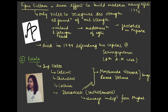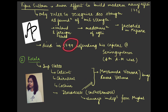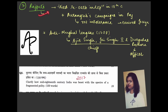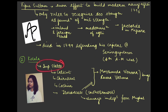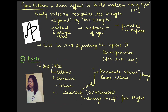Tipu Sultan died during the Fourth Anglo-Mysore War while trying to defend his capital at Seringapatam — remember the name of his capital. He died in 1799. That is one important fact to remember. Another independent kingdom is Kerala. It had important states like Calicut, Chirakkal, Kochi, and Travancore. These names are important because they will come up again when we discuss factories established by various European companies.